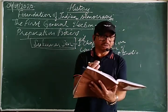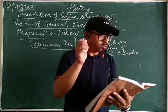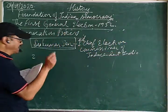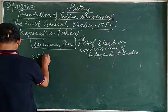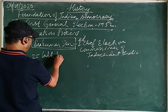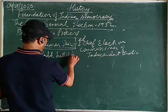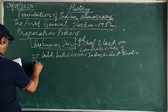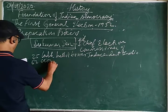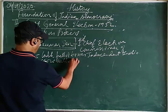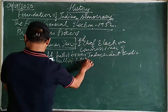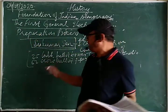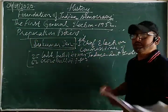He handled the whole situation. 25 lakh ballot boxes and 62 crore ballot papers were used in this election. This was the scale of arrangement made for this election.